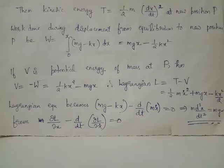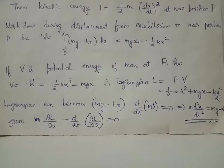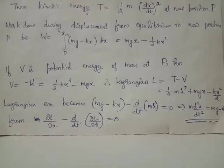Potential energy V at position P is obtained by V equals minus W. Therefore, we have potential energy equals half kx² minus mgx. Lagrangian function capital L equals T minus V, and we have capital L